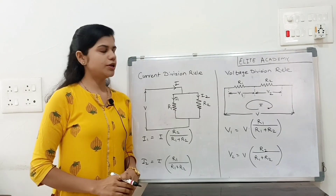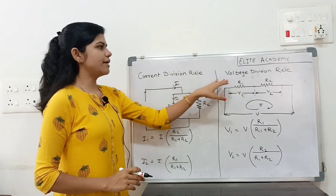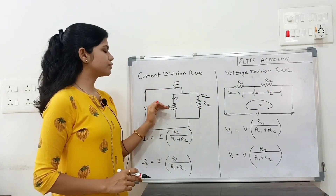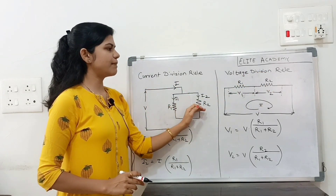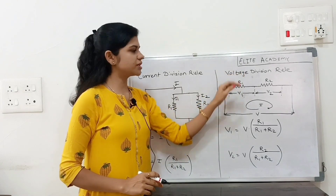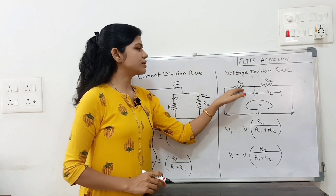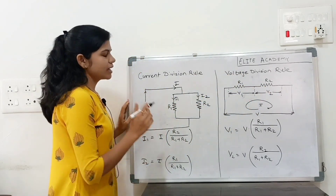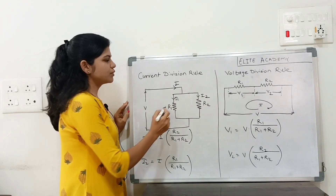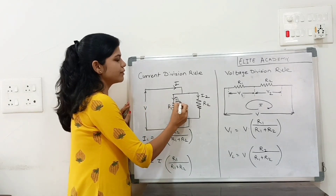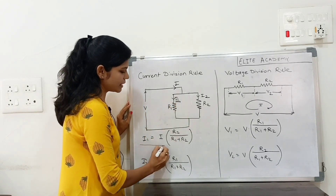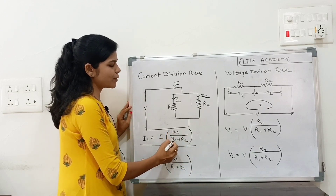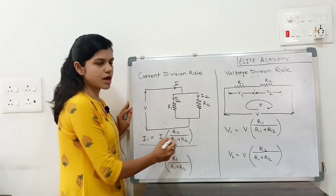Second point: current division rule and voltage division rule. In the case of the current division rule, resistances are in parallel. If an MCQ asks us to find I1, the formula is I1 equals I total into R2 upon R1 plus R2.